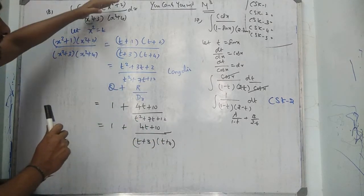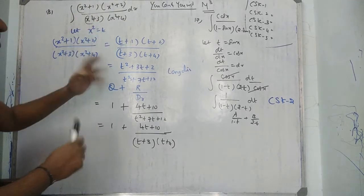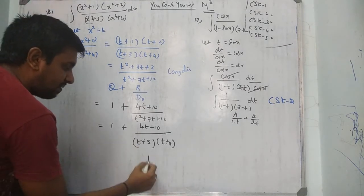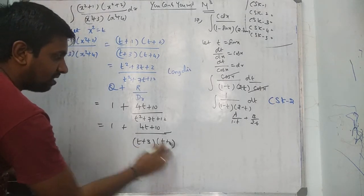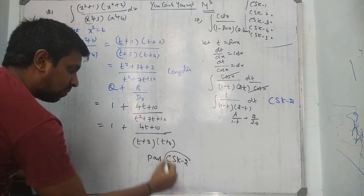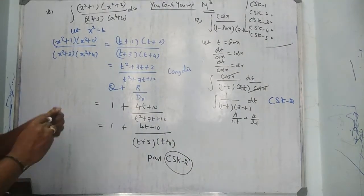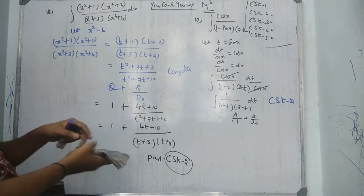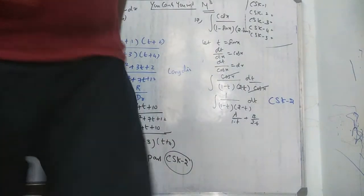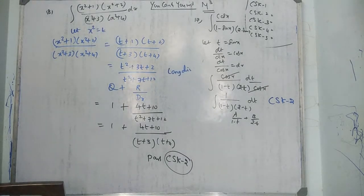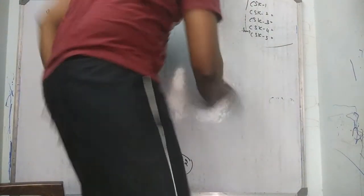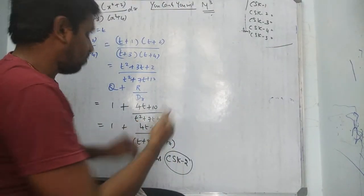Once you replace t with x², then you integrate. So again simplify using partial fractions. The denominator has two brackets, so CSK2 pattern applies. Let me do the full sum because this is a very important sum.